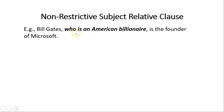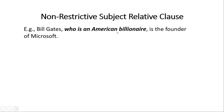So who becomes my new subject in this relative clause, referring back to my original subject, Bill Gates. That's why you don't put 'who he' — although some languages allow that. In English, who is the new subject, offset by commas, which signals a non-restrictive subject relative clause. 'Who is an American billionaire' is just extra information about Bill Gates — it does not restrict him in any case.